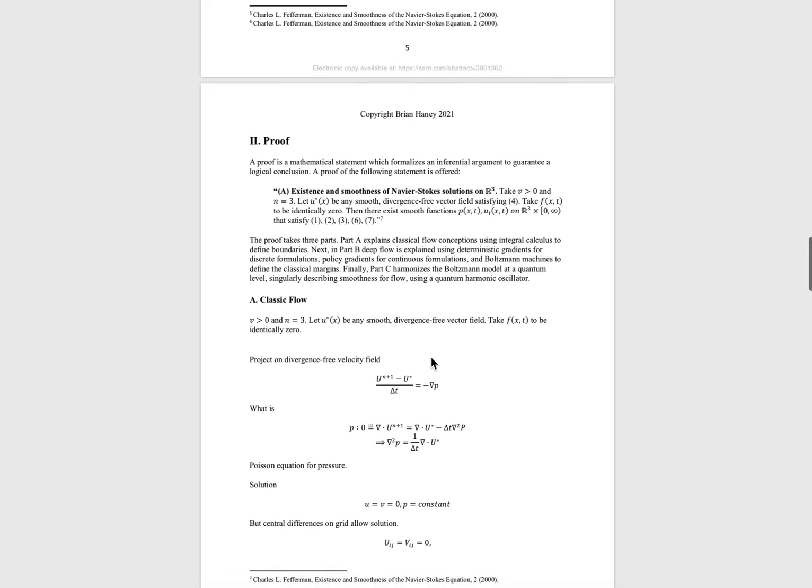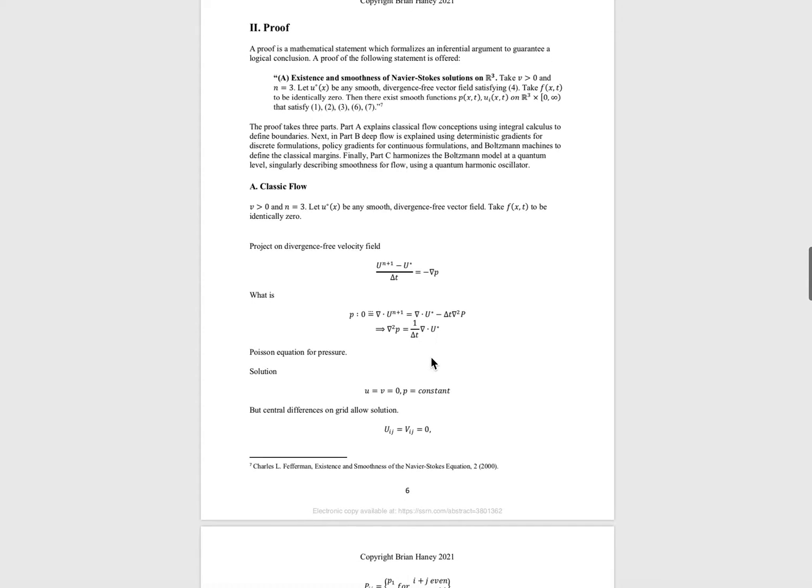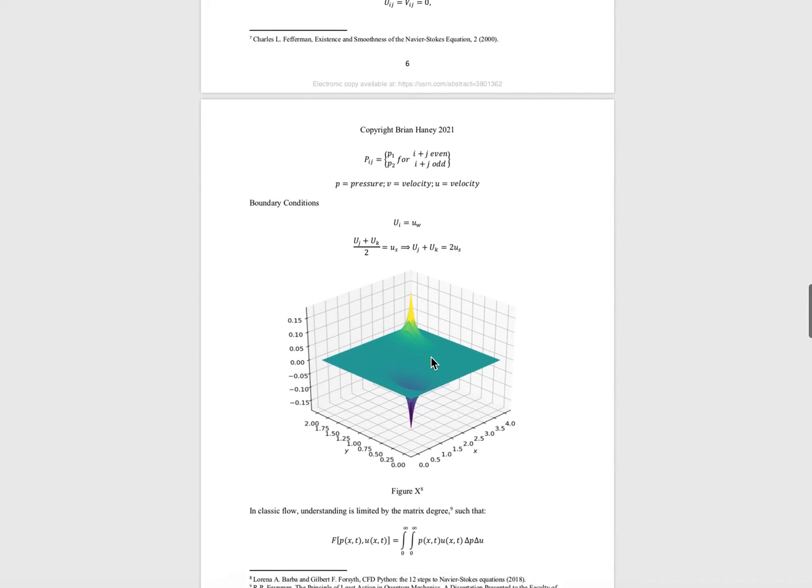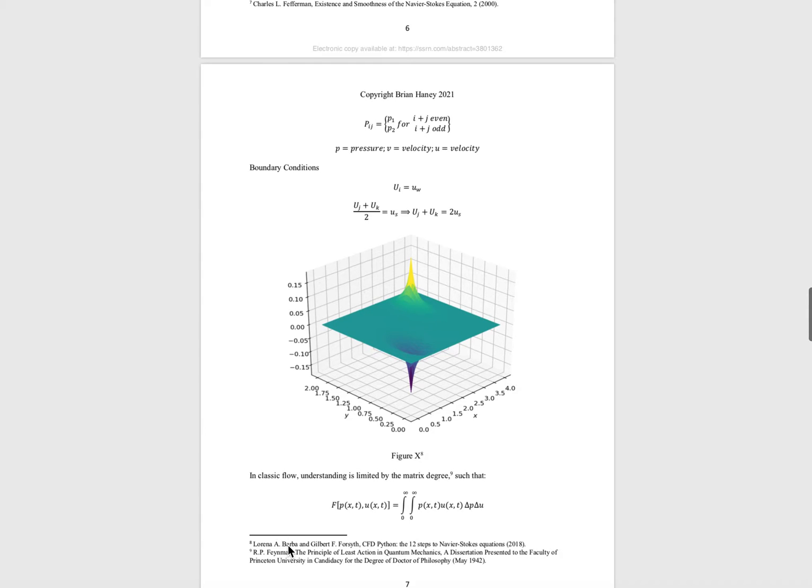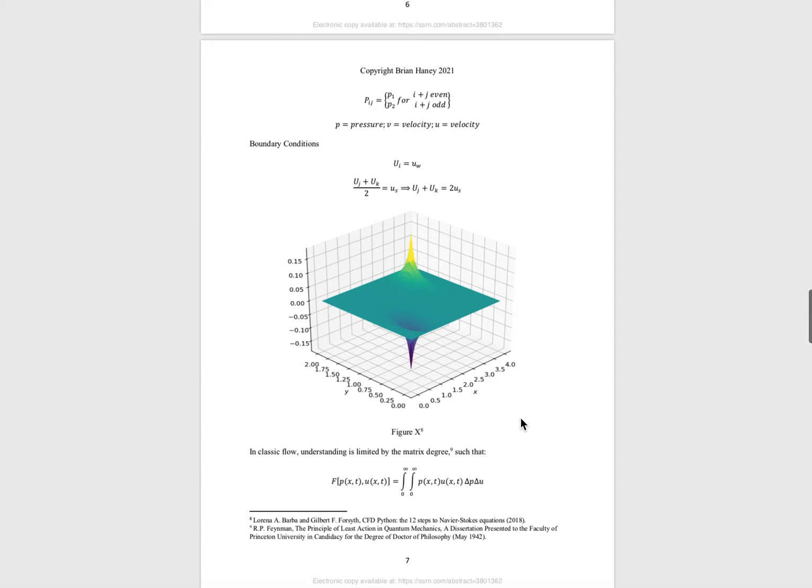To get from A to B, I started by describing flow classically to the best of my knowledge. The best work I found on classic flow was Lorena Barbara's paper on the 12 steps to Navier-Stokes. She did great work in simulations using Python, so I recreated those experiments and did a little twist on the models she introduced. We're citing her for the image.